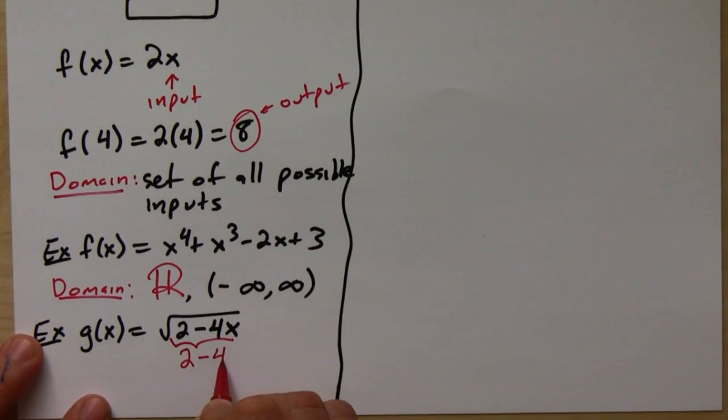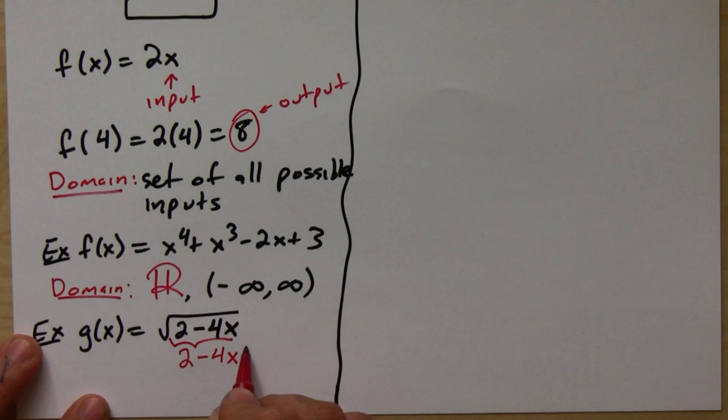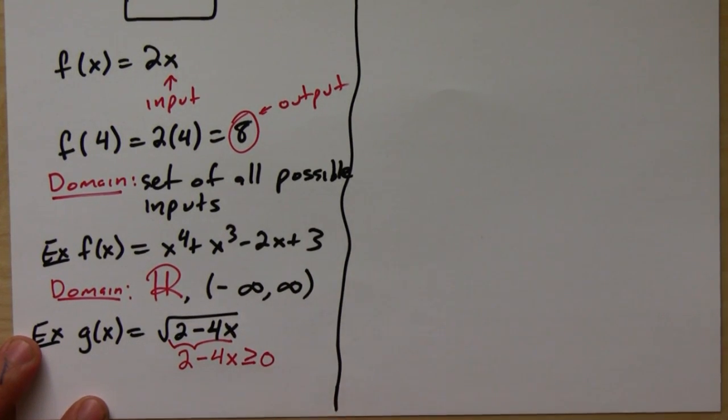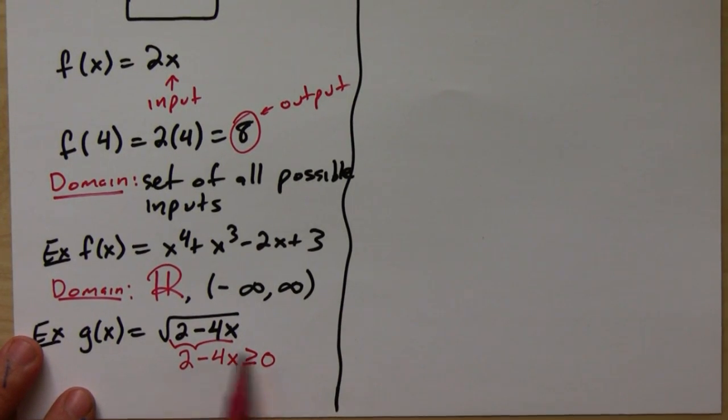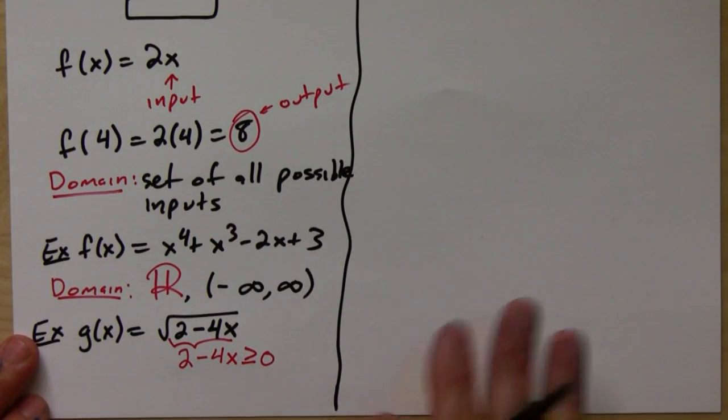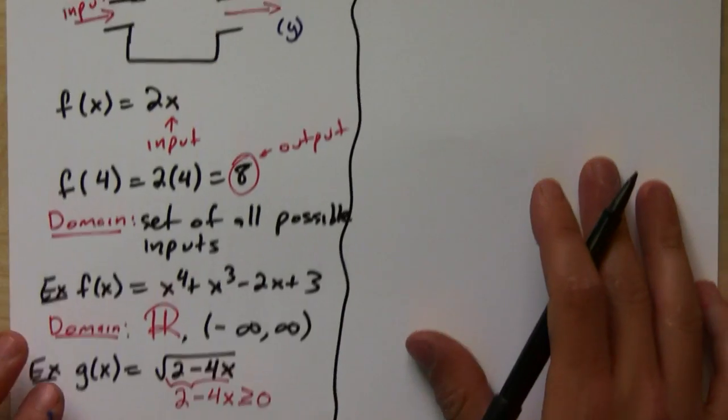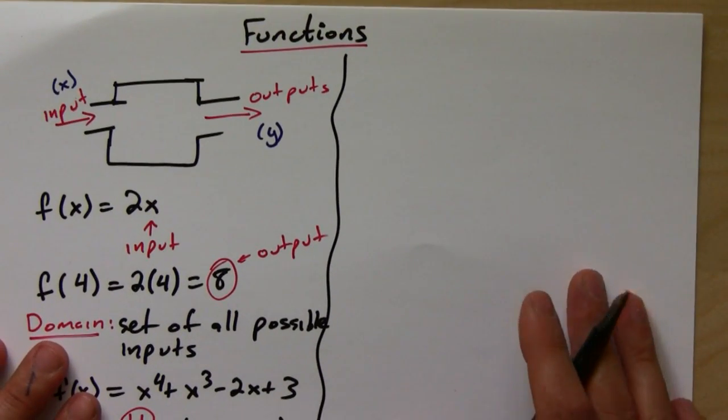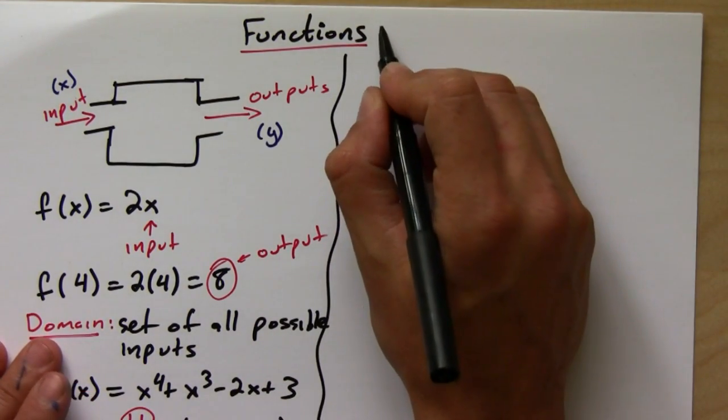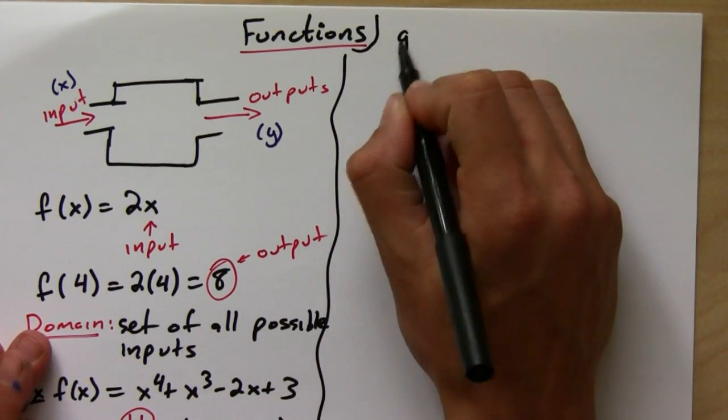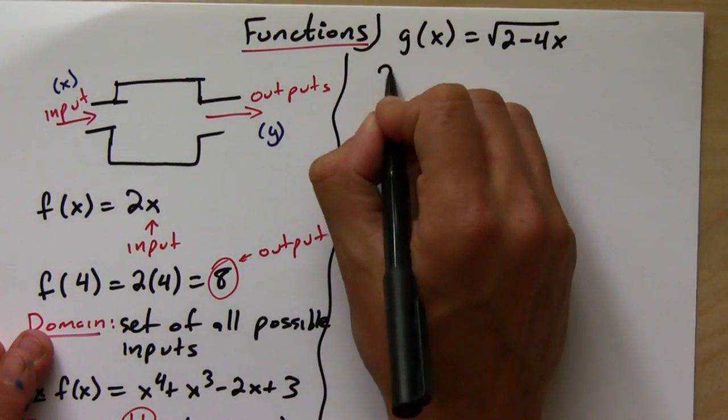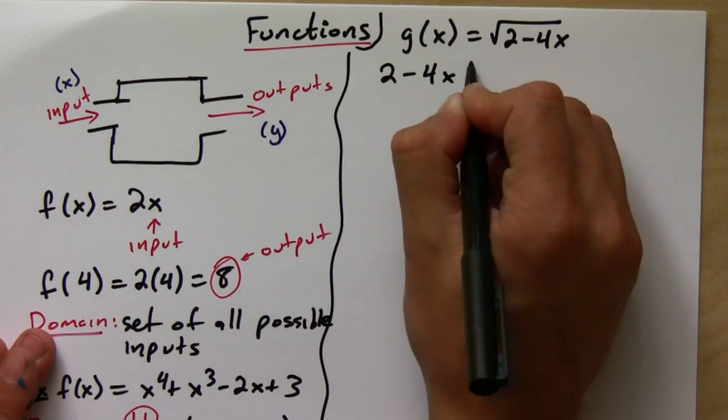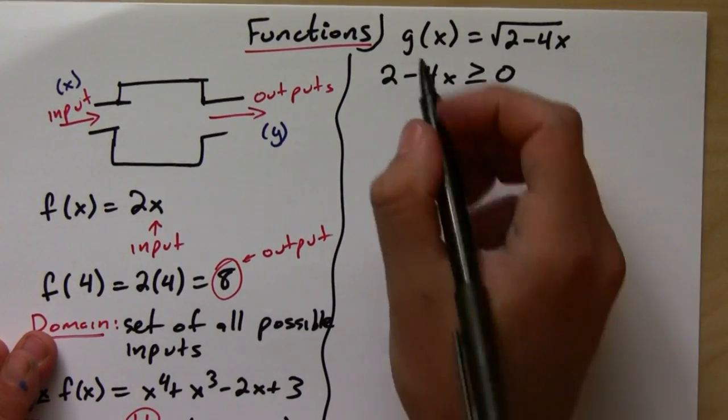2 - 4x greater than or equal to zero. So if you're looking for the domain of this function, what you're basically doing is trying to solve this inequality. We can do that. Let me rewrite it over here. So we have g(x) = √(2 - 4x), and 2 - 4x ≥ 0. We can solve this. First, we'll bring the negative 2 over.